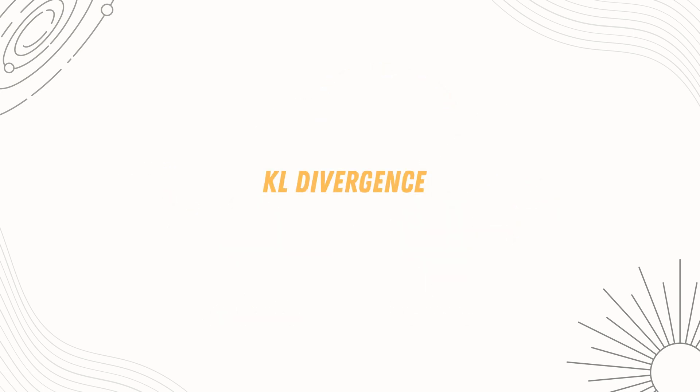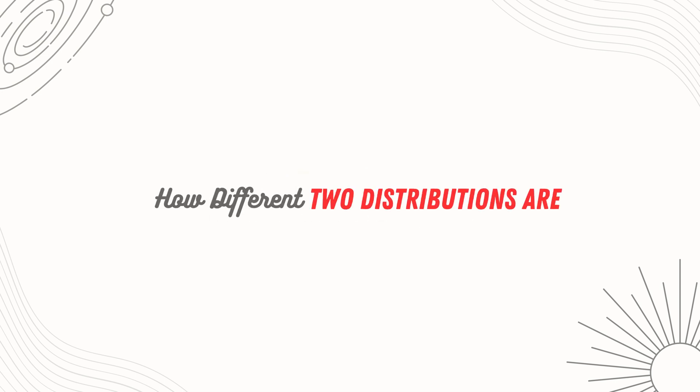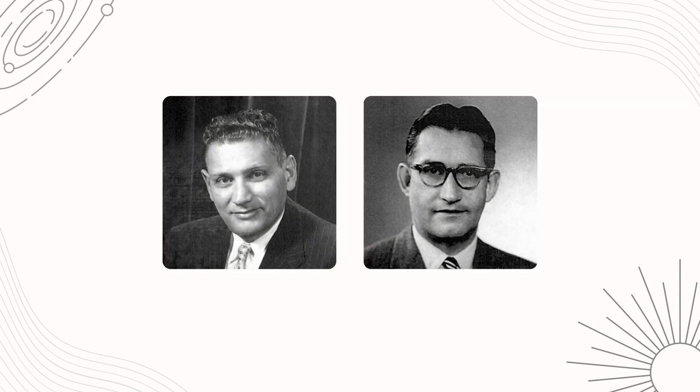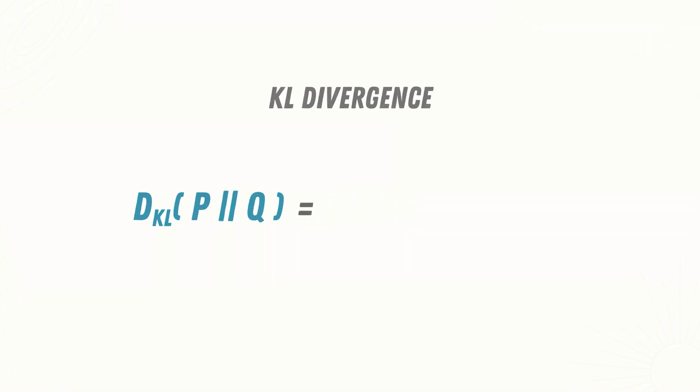Next comes a really important function known as the KL divergence. Imagine you have two probability distributions p and q, and you have to determine how different they are. KL divergence, introduced by Kolbach and Liebler in 1951, gives us a measure of this difference. This is the mathematical form of the KL divergence.